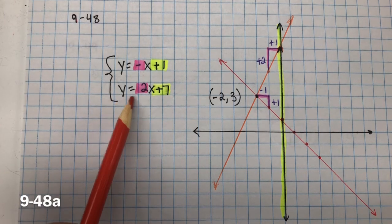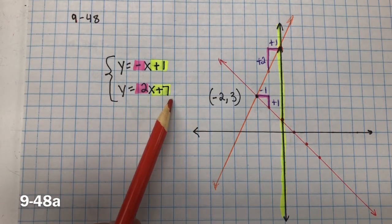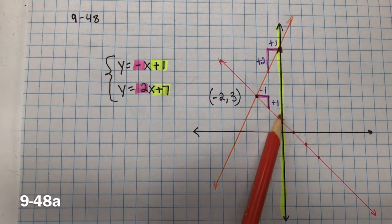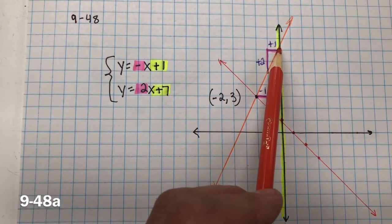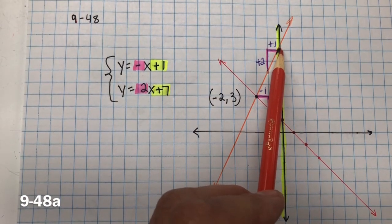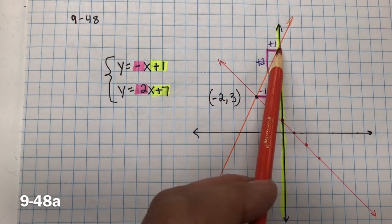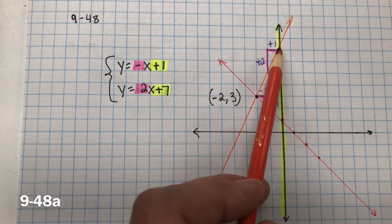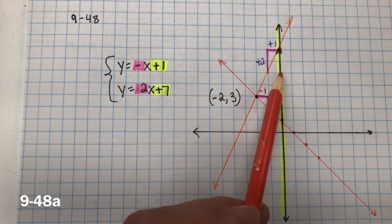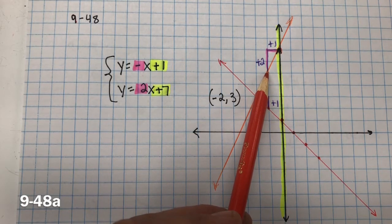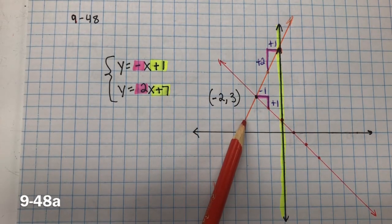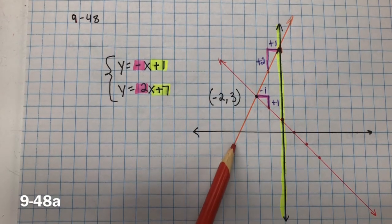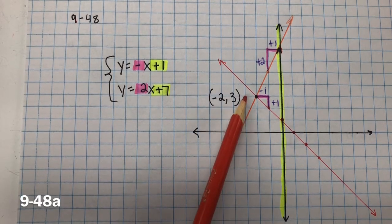For the second equation, Y equals 2X plus 7. Our Y-intercept is at positive 7: 1, 2, 3, 4, 5, 6, 7 on the Y-axis. There's our Y-intercept. And this one's going to have a positive slope of 2. So I could go positive 2 over positive 1, or I could do negative 2 and negative 1, because a negative divided by negative is a positive. And anywhere that I have a point, I would get that same rate of change, positive 2 over 1, positive 2 over 1.